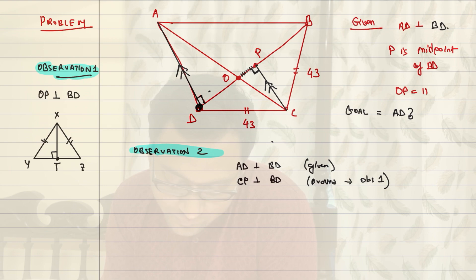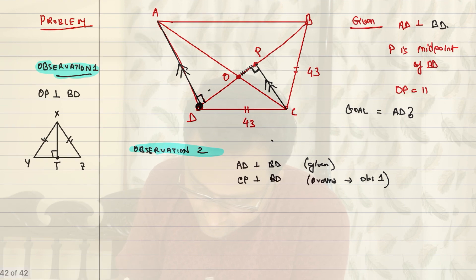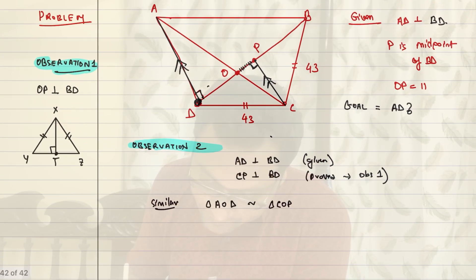So, we have found a very important pair of similar triangles. And what is that? Well, two triangles are similar. Which two triangles are similar? Triangle AOD is similar to triangle COP. Vertically opposite angles equal. These two angles are 90 degree. So, the remaining angles must be equal as well.